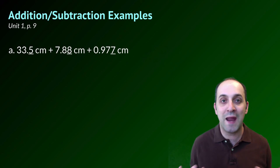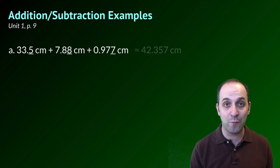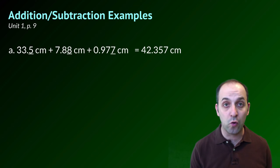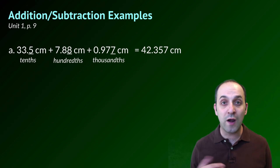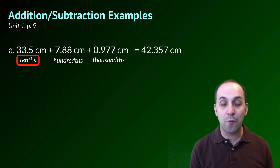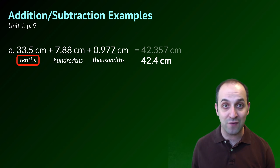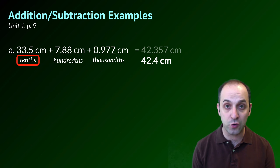Let's look at some addition and subtraction examples from page nine in our unit one packet. Here we have three numbers, and the first thing we're going to do is just add them all together. When we do this, we get 42.357 centimeters. But remember the rule — our answer can only be as precise as our least precise term. The first term is precise to the tenths, which is the least precision we have, so our answer should only be recorded to the tenths place. We wind up rounding up from 42.3 to 42.4, because we have a five in the hundredths place. So the best answer is 42.4 centimeters.